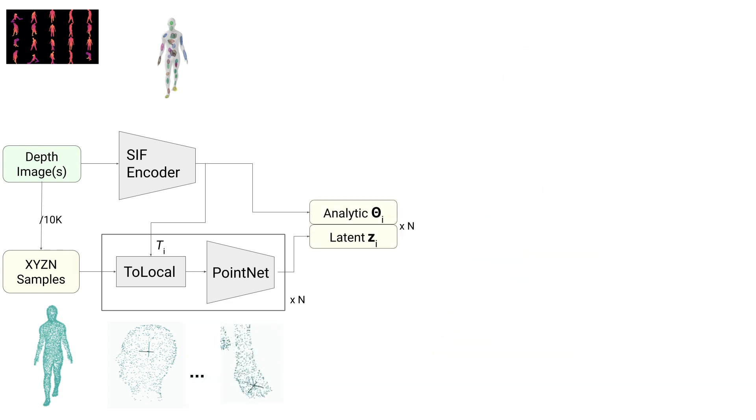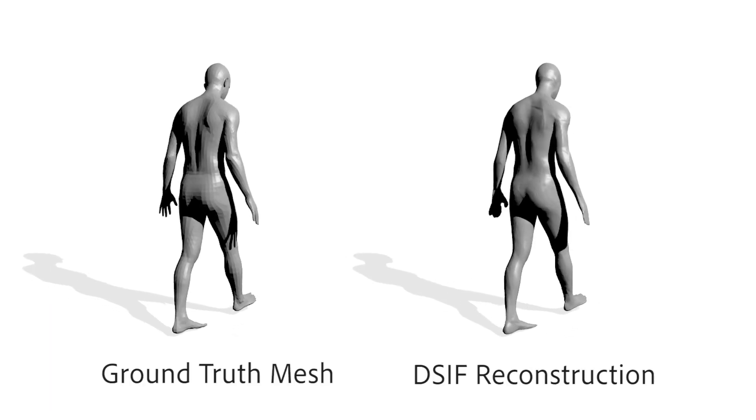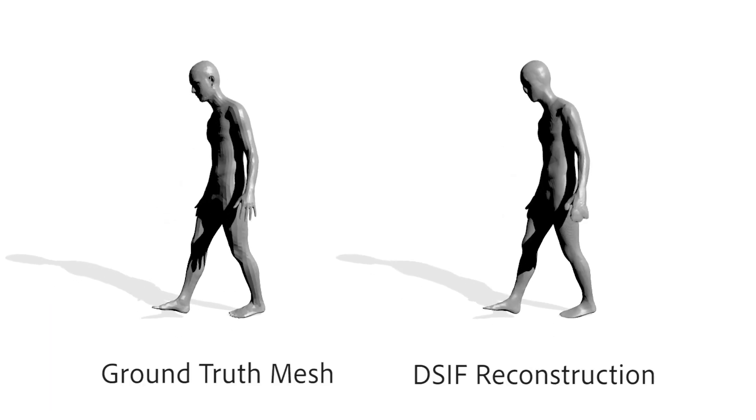We concatenate the SIF template and the latent features for each shape element to form the DSIF representation. To determine whether a query location X is inside or outside the predicted shape, we transform the query to each local frame. We evaluate the SIF parameters analytically, and evaluate the latent codes using a reduced parameter version of the occupancy network's architecture. We combine the coarse template shape and the latent shape details to form the overall reconstruction. By evaluating queries on a regular grid and running marching cubes, we can extract a mesh.